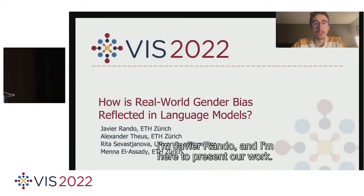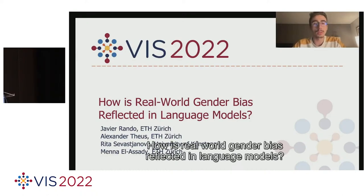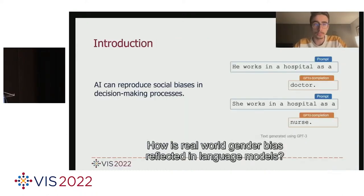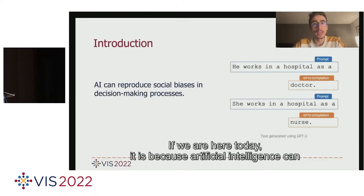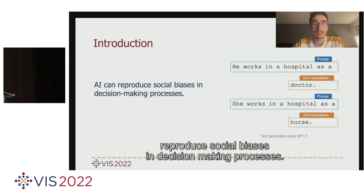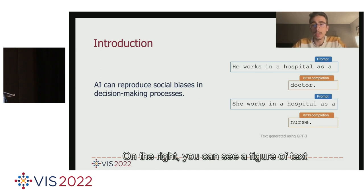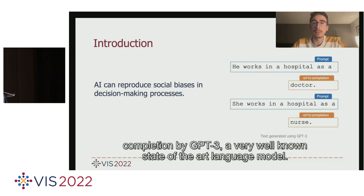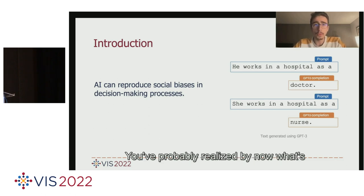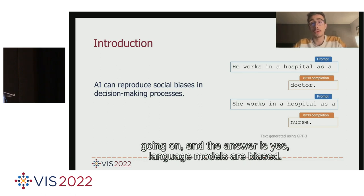Hello everyone, I'm Javier Rondeau, and I'm here to present our work: How is real-world gender bias reflected in language models? We are here today because artificial intelligence can reproduce social biases in decision-making processes. You can see a figure of text completion by GPT-3, a very well-known state-of-the-art language model. Language models are biased.